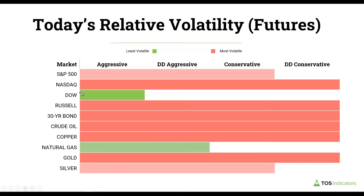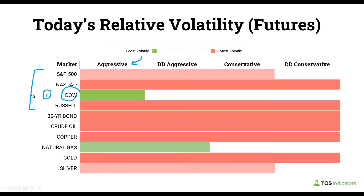Coming back to the graphic, the first thing that should stand out is the Dow. The Dow today was the only market that still respected its aggressive volatility box structure and had the least volatility across the board. That by far would be the one I'd rank number one in terms of least volatility.